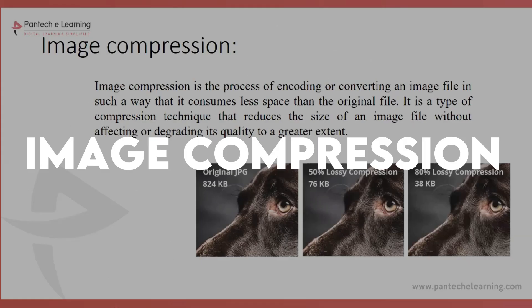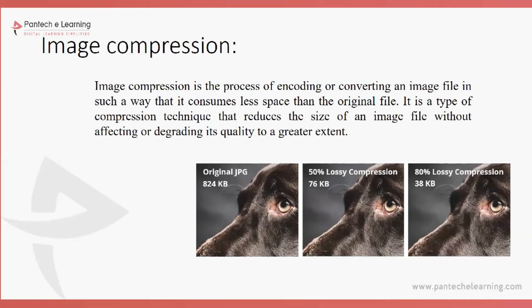Today's session is known as Image Compression. Image compression is a process to reduce the size of the image according to the storage. There are many types of image storage formats, like JPG, JPEG, and BMP, which is known as bitmap. Each of these different formats has a different storage size depending on who captures the photo.